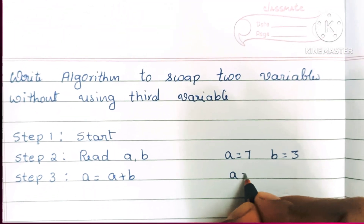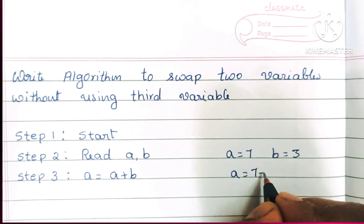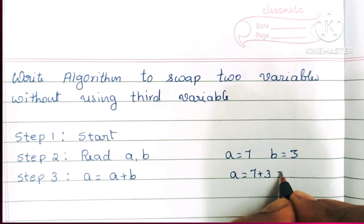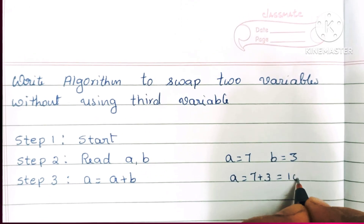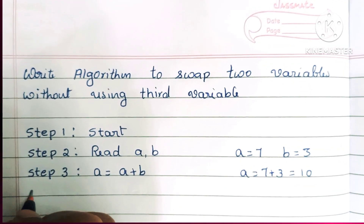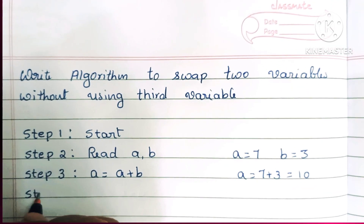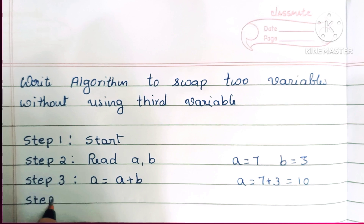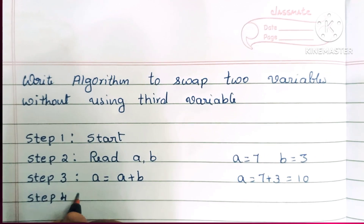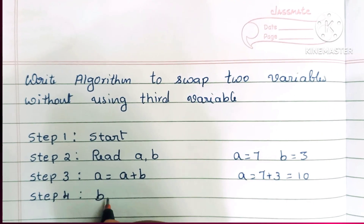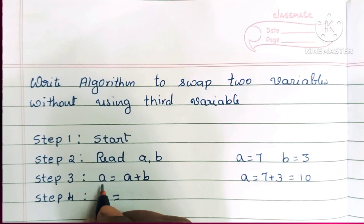In step 3, a is equal to a plus b, that is 7 plus 3, which equals 10. So now a holds the value 10.